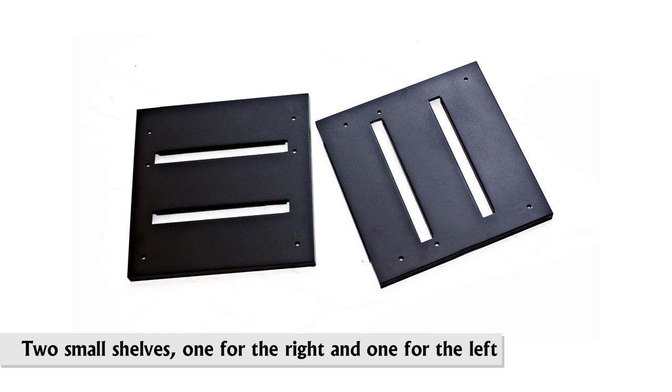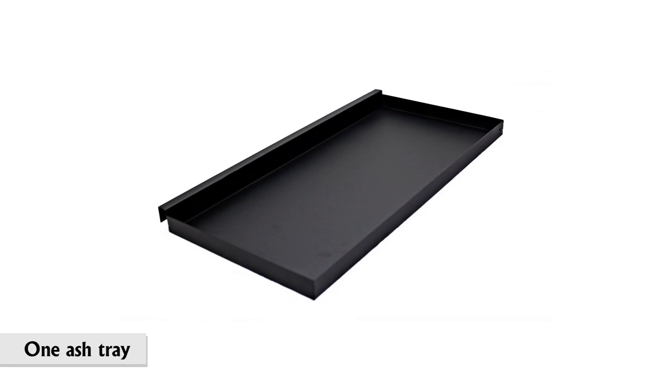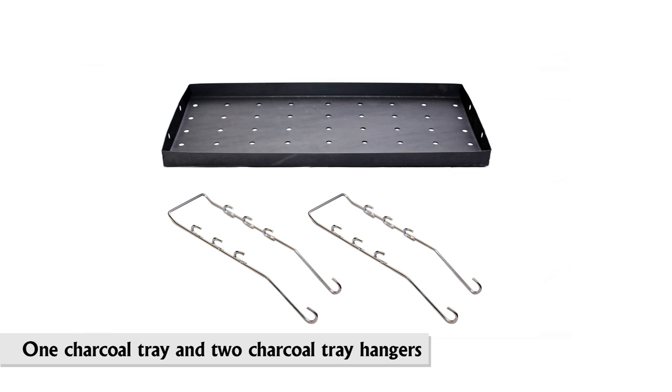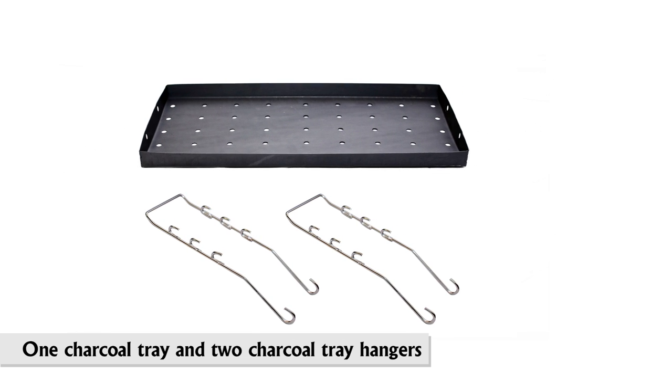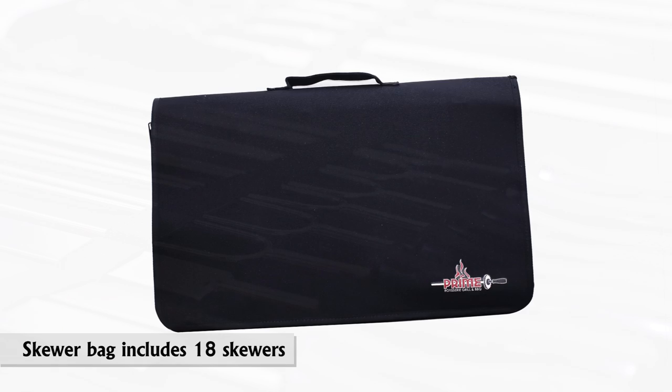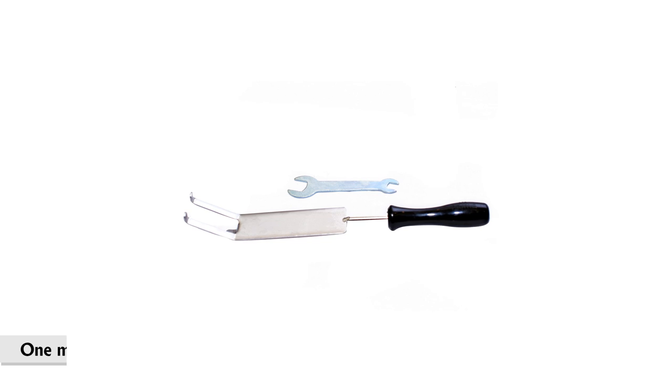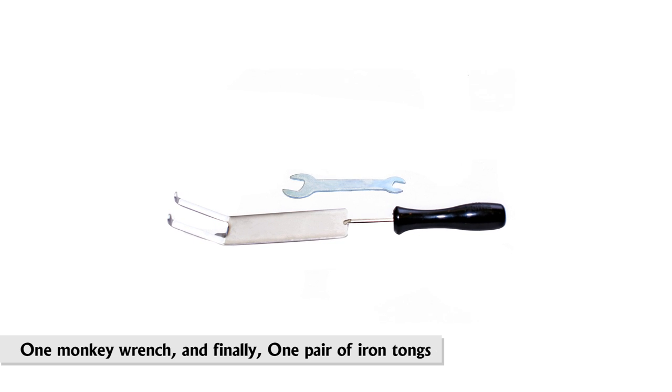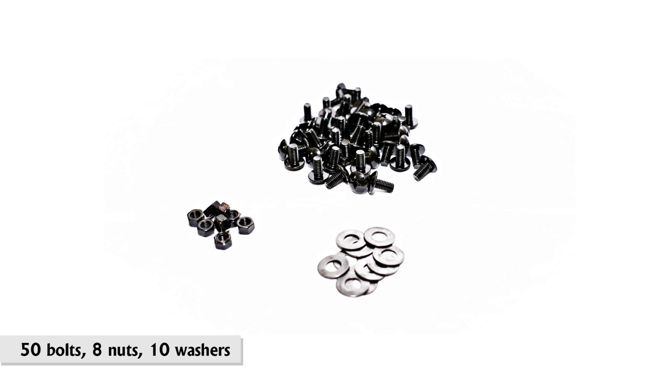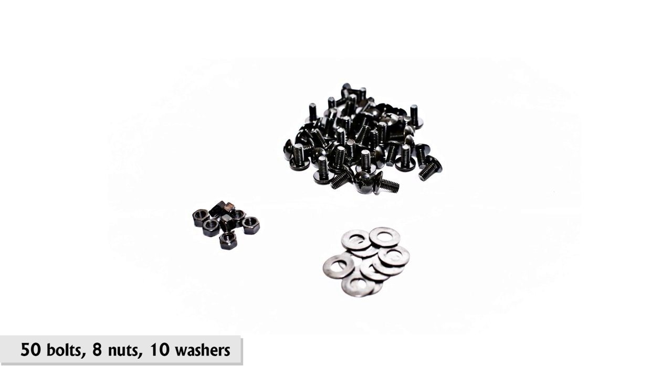Two small shelves, one for the right and one for the left, one ashtray, one charcoal tray and two charcoal tray hangers, two steak trays, a skewer bag including 18 skewers, one monkey wrench, and one pair of iron tongs. You should have 50 bolts, 8 nuts and 10 washers.